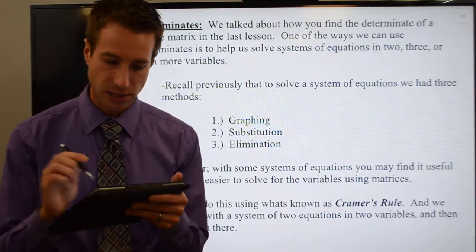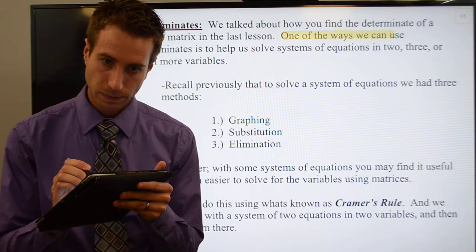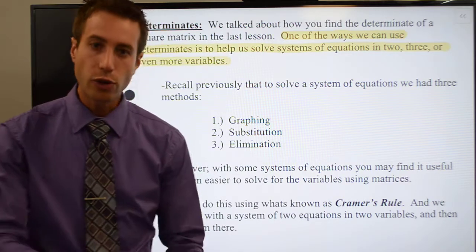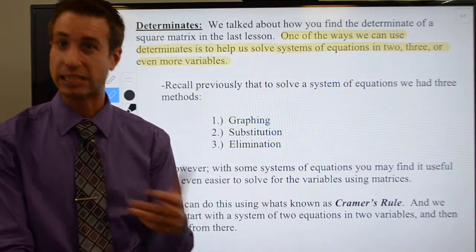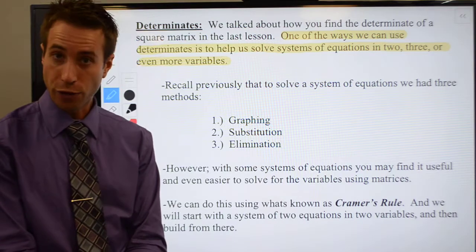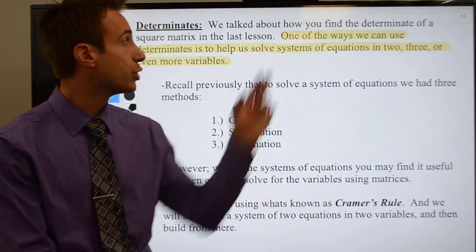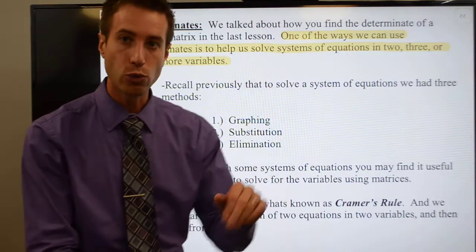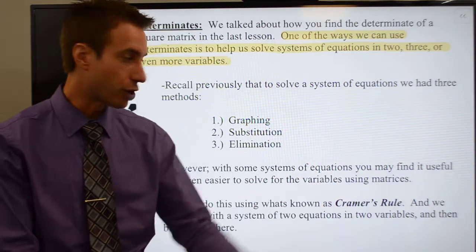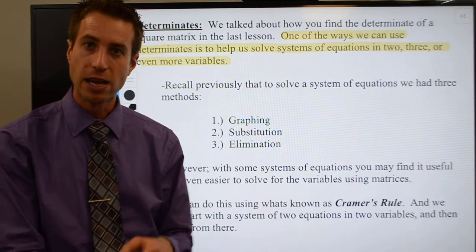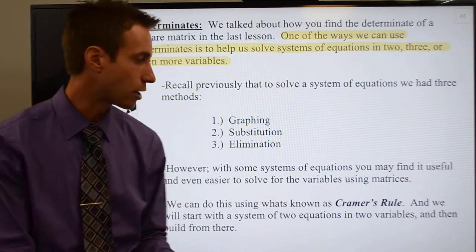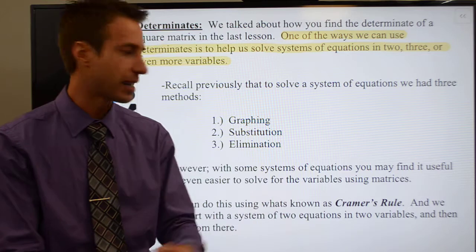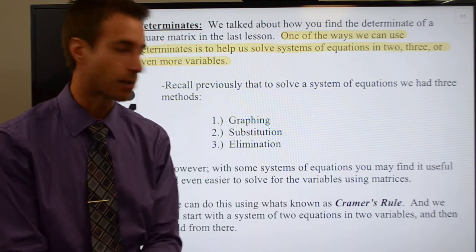One of the ways that we're going to use what we just learned — being determinants, finding the determinants of two-by-two and three-by-three square matrices — is we will use those determinants to help us solve a system of two or three equations. You'll remember from earlier in this chapter we learned a couple of different ways of solving systems of equations that you also would have learned in Algebra 1. We could graph them, which is certainly a good way — it definitely takes way longer, but it's a fine way to find a solution if your system has one.